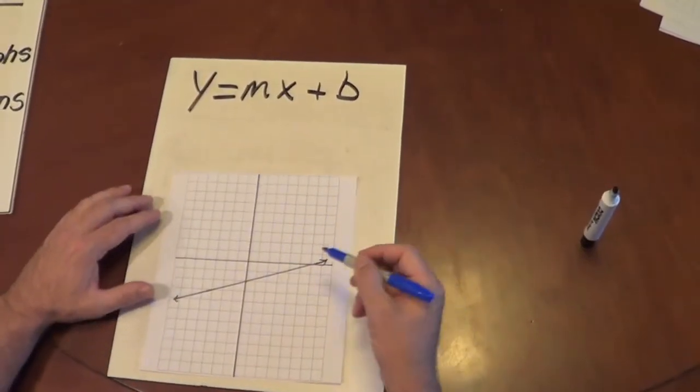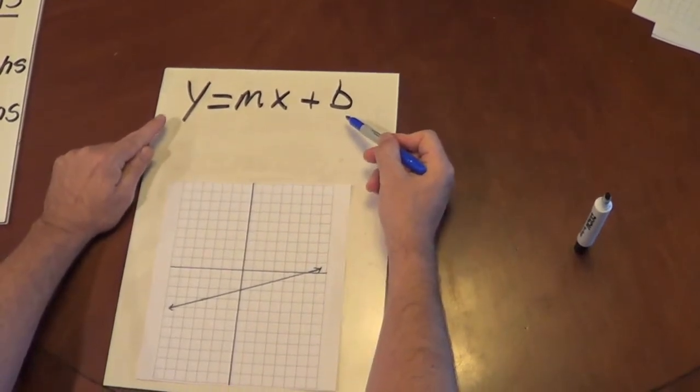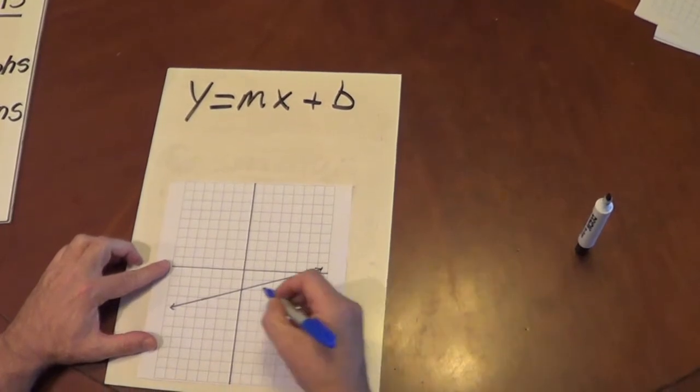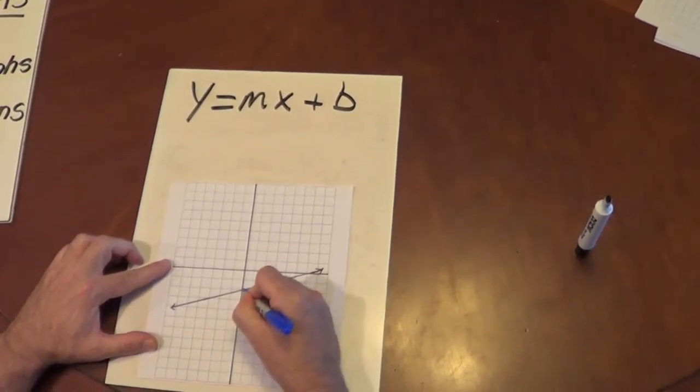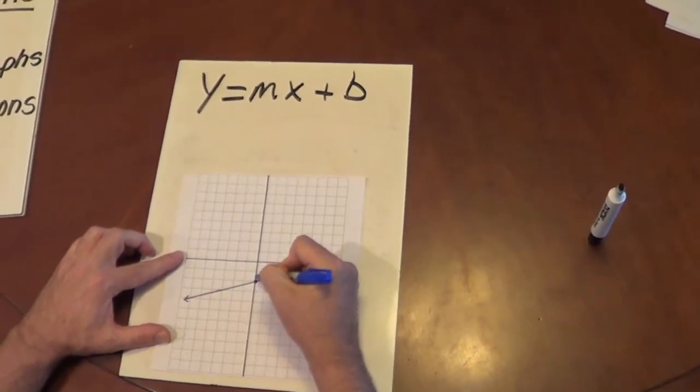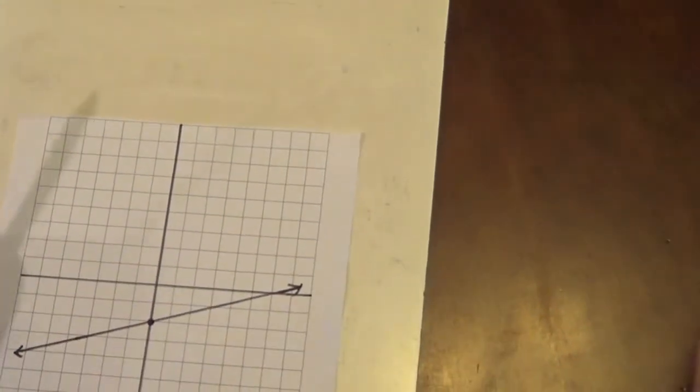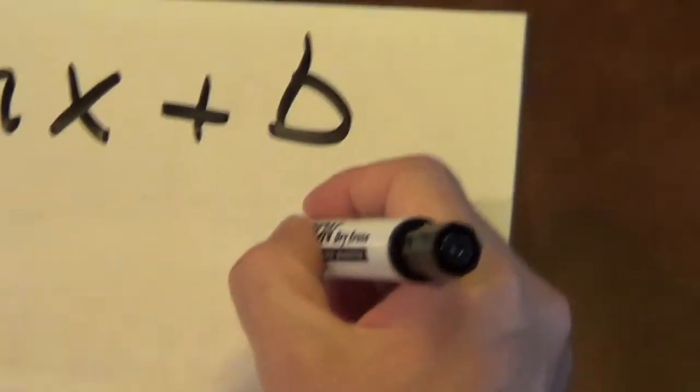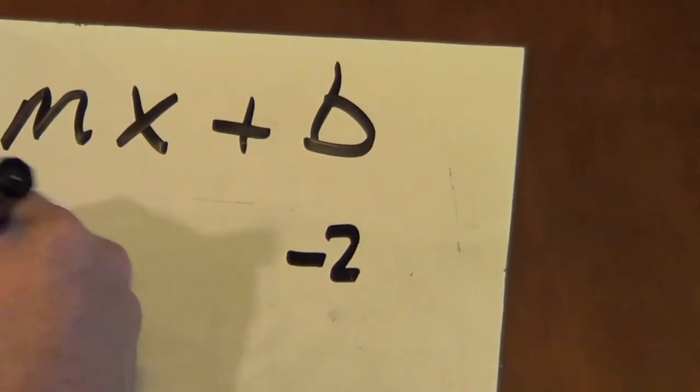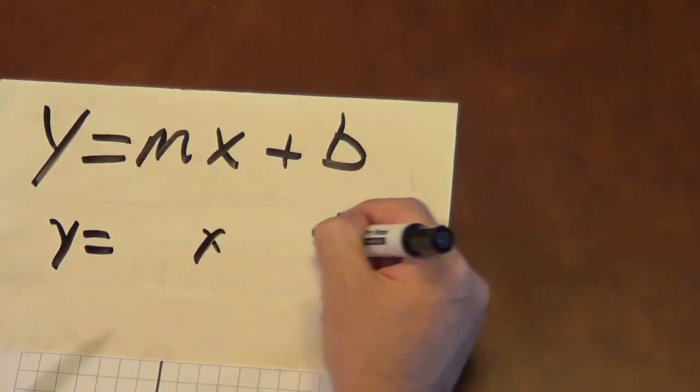Okay, in this example, I'm going to start with a graph and I'm going to come up with my equation. So the first thing I want to do is identify the y-intercept. The y-intercept is where x equals 0. In this case, the y-intercept is at negative 2. I went down two spaces. So I know that my b, or my y-intercept, is negative 2. So at this point, I have y equals something x minus 2.